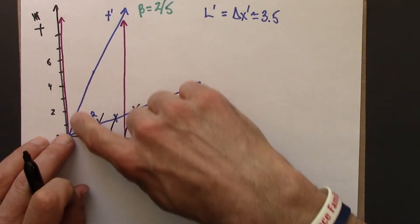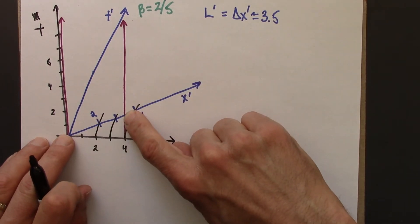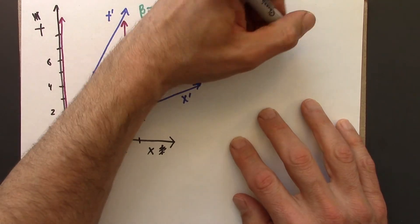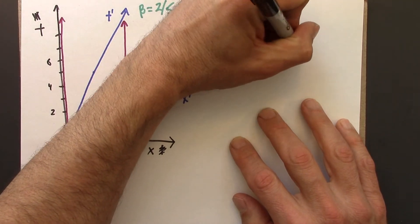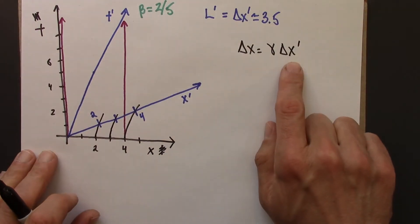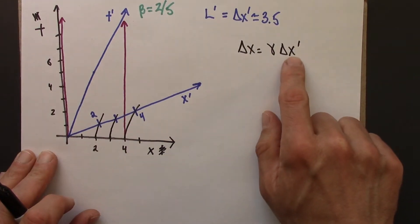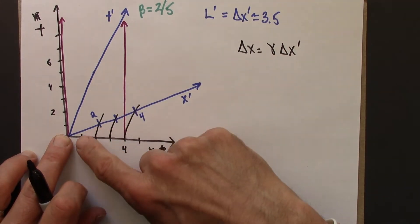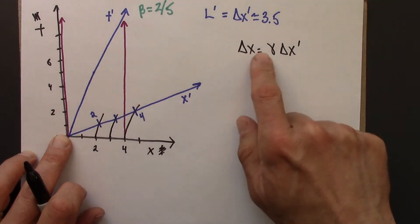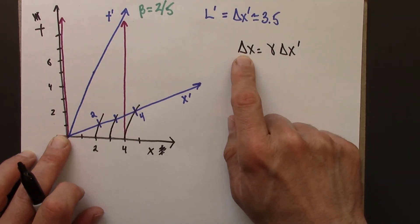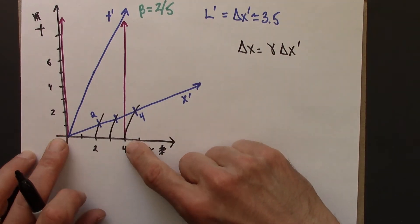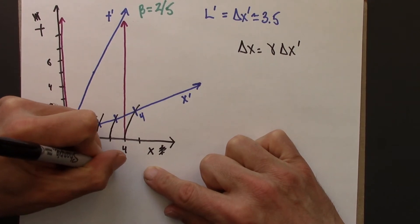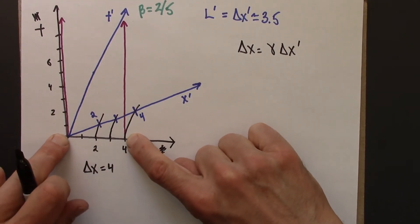So, remember in the previous unit, we talked about how to calibrate these axes. And we decided that the calibration works like this. So delta x-prime, that would be a distance on the x-prime axis, and we can relate it to a distance on the x-axis as follows. In this particular case, what we know is a delta x of 4.